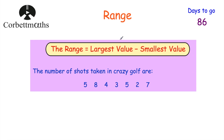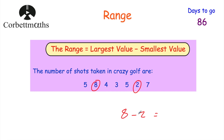The last one we're going to look at is the range. The range isn't an average — the mode, the mean and the median are all types of average. The range is a measure of spread; it measures how spread out values are. The range is found by doing the largest value subtract the smallest value. Here we've got the number of shots taken in crazy golf: 5, 8, 4, 3, 5, 2 and 7. The largest value is eight, the smallest is two, so eight subtract two equals six. The range is six.